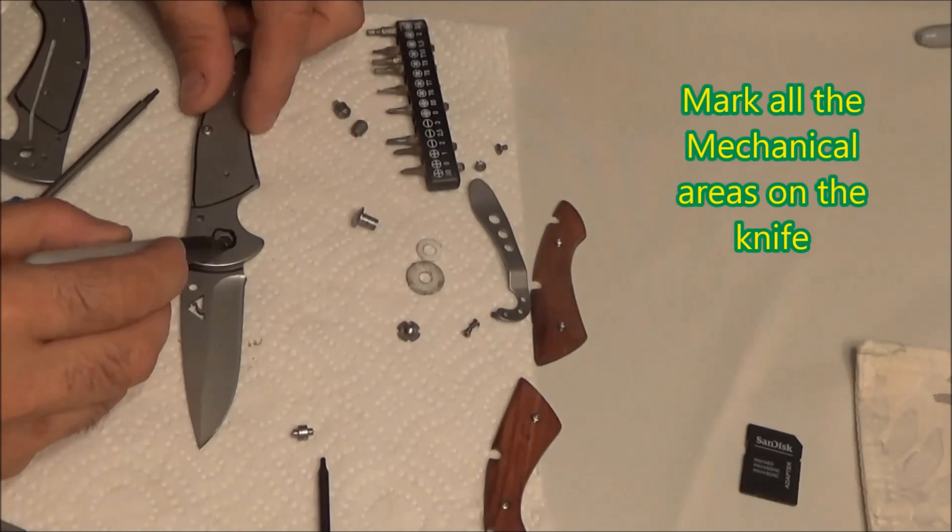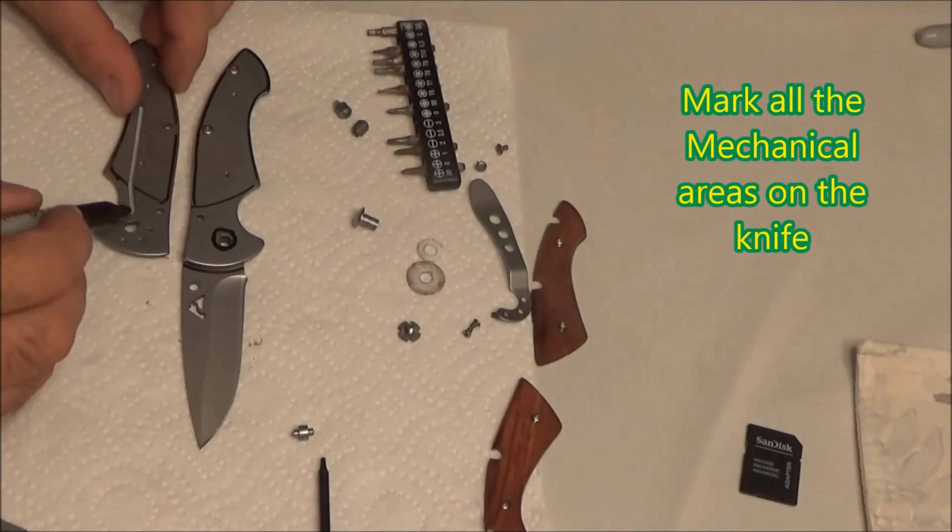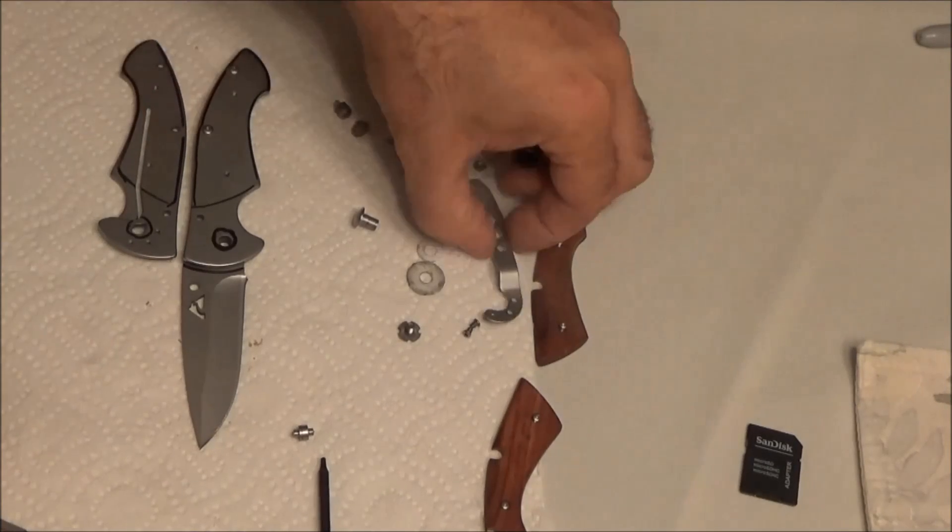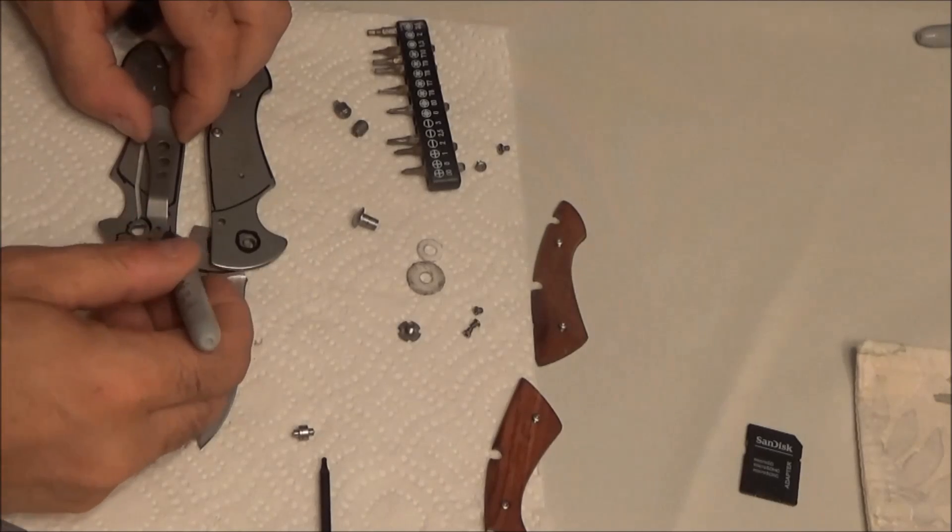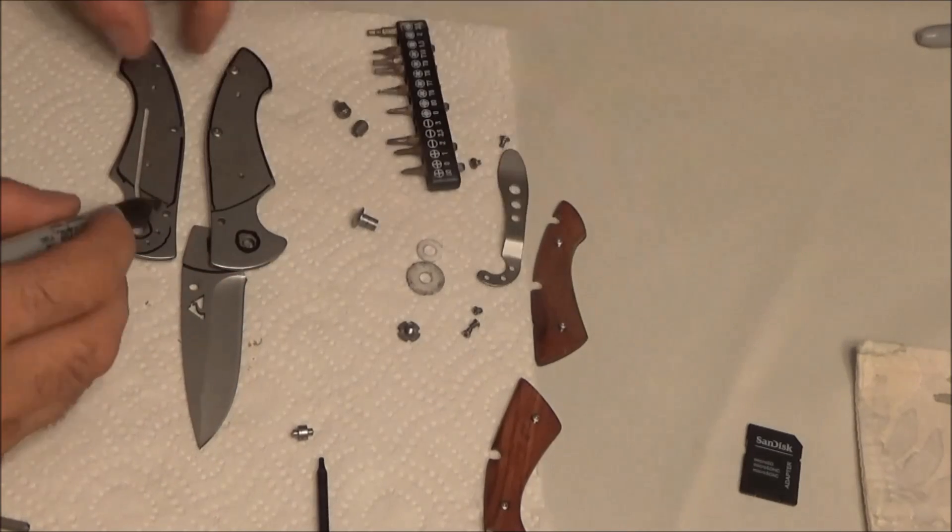Then you'll want to, with a Sharpie marker or some other marker, mark off all of the mechanical spots, like pivot pins and areas where the blade rotates,